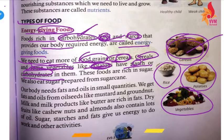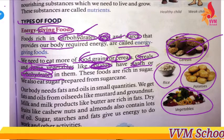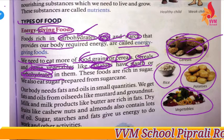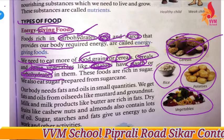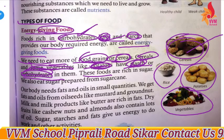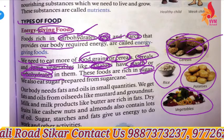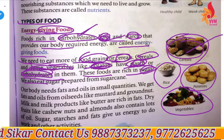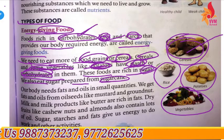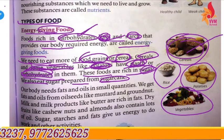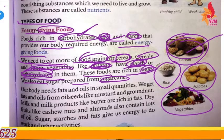These are carbohydrates and starch. These foods are rich in sugar. We also eat sugar prepared from sugarcane.